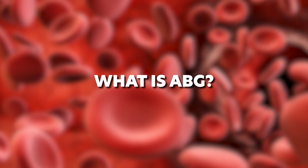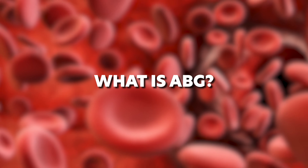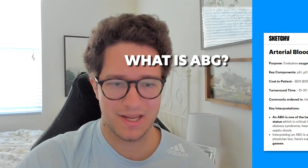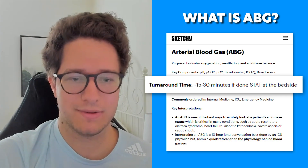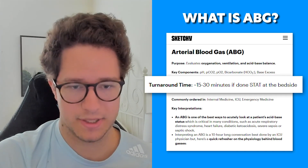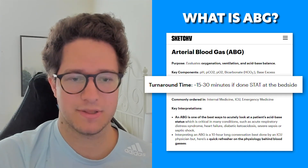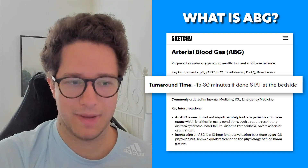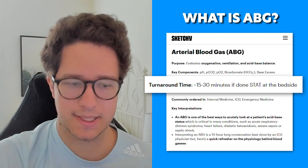So what is an arterial blood gas, or ABG? This is real-time information about a patient's respiratory and metabolic status. This helps us guide interventions like ventilation, fluids, and medications.